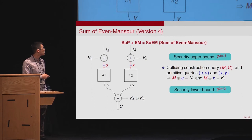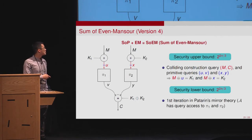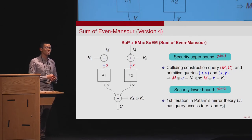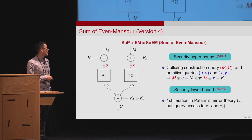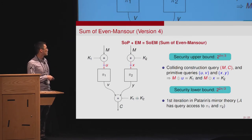The security proof of this construction is performed using Patarin's H-coefficient technique. The proof is based on the first iteration of Patarin's mirror theory. However, here the adversary has query access to two underlying primitives, which makes the accounting more difficult. Nevertheless, the resulting construction achieves 2n/3-bit security.